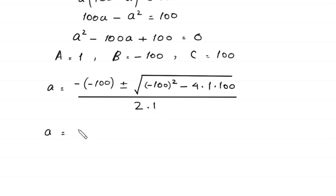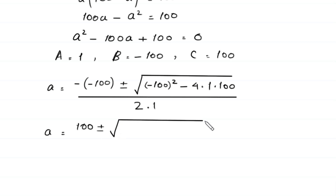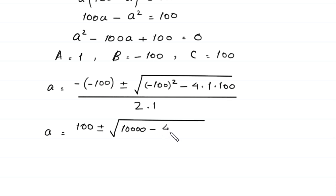A equals positive 100 plus or minus the square root of negative 100 squared, which equals positive 10,000, minus 4 times 1 times 100, which is 400. That gives the square root of 9,600, divided by 2.